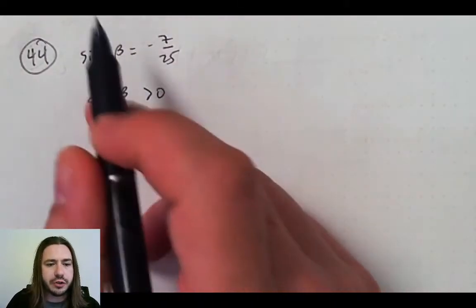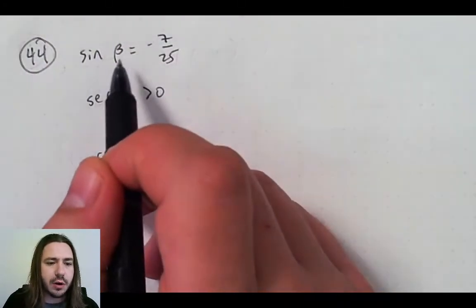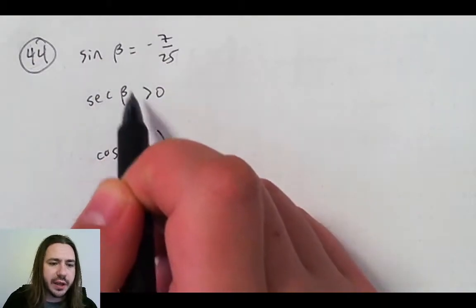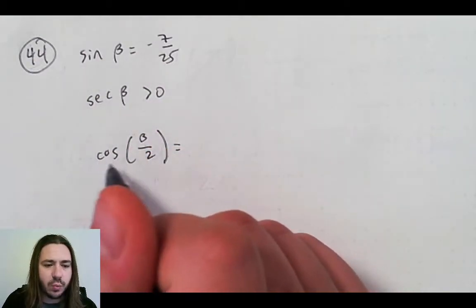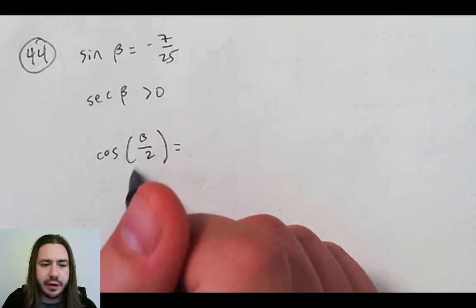So for number 44, we're given two pieces of information that is going to help us analyze what angle beta is here, and we are asked to find cosine of beta over 2.